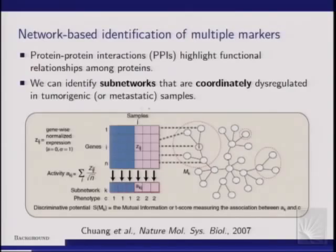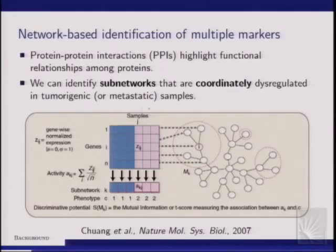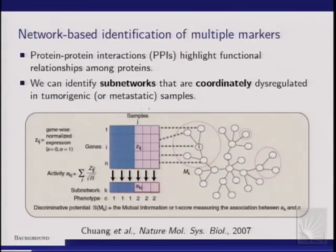Differential network analysis has been around for a while. The general idea is that we have protein-protein interaction data available — human protein interaction data — which tells us about who is related to whom in terms of function. If we can identify subnetworks — proteins connected to each other — which are also dysregulated when considered together, they might be good systems-level markers for the phenotype, in our case colon cancer.